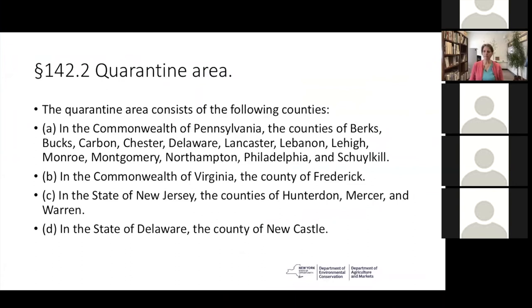The quarantine area is not the entire state — that's a common misconception. For New York's exterior quarantine, specifically 13 counties in Pennsylvania, one county in Virginia, three counties in New Jersey, and one county in Delaware are designated. If you're bringing something out of these areas or going down to those areas and coming back into New York, regulations come into place and you'll need certain paperwork. Those coming through the quarantine area from elsewhere — say from North Carolina traveling through to New York — do not need a certificate of inspection as long as they don't stop in the quarantine area beyond refueling and traffic conditions.